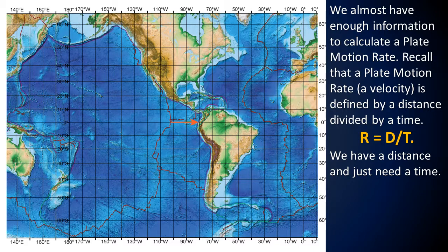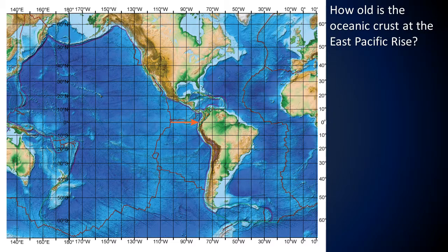We almost have enough information to calculate a plate motion rate. Recall that a plate motion rate or velocity is defined as distance divided by time: Rate = Distance / Time. We have a distance; we just need a time. How old is the oceanic crust at the East Pacific Rise? The oceanic crust is new at the East Pacific Rise, so it is zero millions of years old — 0 Ma.